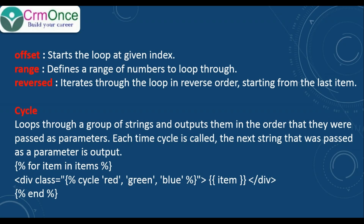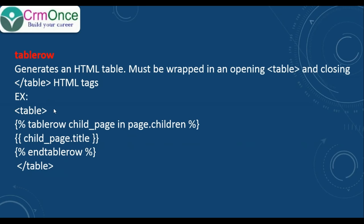And here we have endfor. Next thing is table row. This tag generates an HTML table. Table row tag should be used in the HTML table tag - it must be wrapped open with the table tag and closing with the slash table tag. For example, here table row child pages in page.children and page.title and end table row.